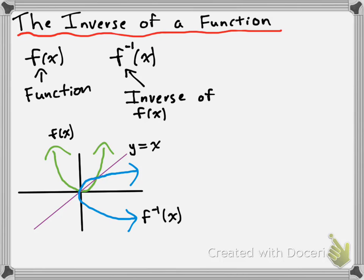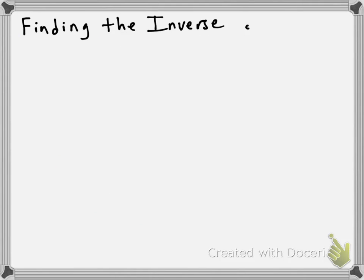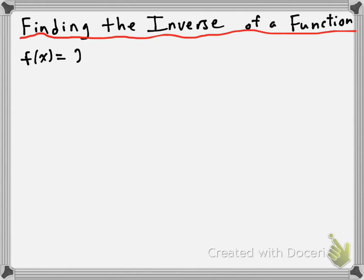We're going to use that bit of information to take the inverse in a moment. Finding the inverse of a function — you guys went through and found the inverse of a couple of functions today, and you relied on recognizing the operations in a function and then reversing them. There's a nicer way to do it that will be a little bit quicker and a little bit cleaner. So let's go through an example. Let's suppose we have f of x is equal to 2x minus 8, a linear function, and suppose we wanted to find f inverse of x.